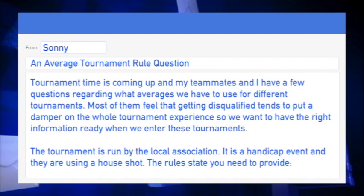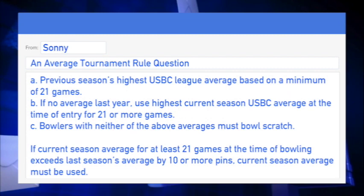Tournament time is coming up and my teammates and I have a few questions regarding what averages we have to use for different tournaments. Most of them feel that getting disqualified tends to put a damper on the whole tournament experience, so we want to have the right information ready when we enter. The tournament is run by the local association. It is a handicap event using a house shot. The rules state: (a) you need to provide a previous season's highest USBC league average based on a minimum of 21 games; (b) if no average last year, use the highest current season USBC average at the time of entry for 21 or more games; (c) bowlers with neither of the above averages must bowl scratch. If the current season average for at least 21 games at the time of bowling exceeds last season's average by 10 or more pins, the current season average must be used.